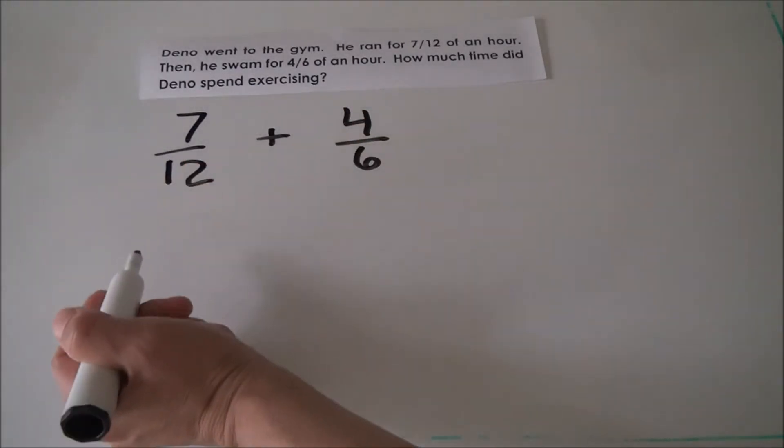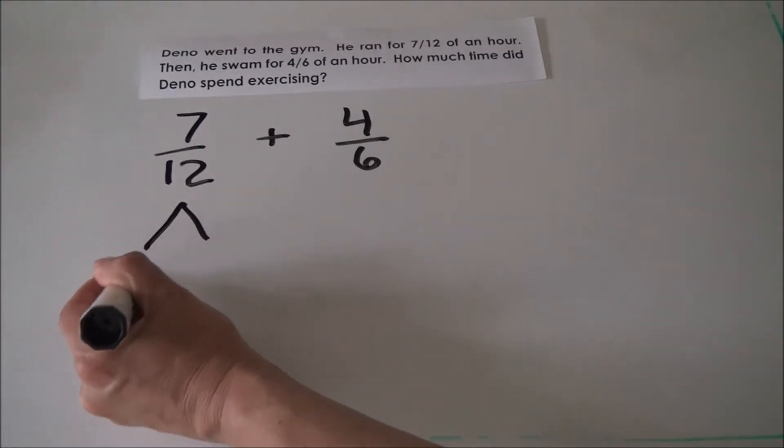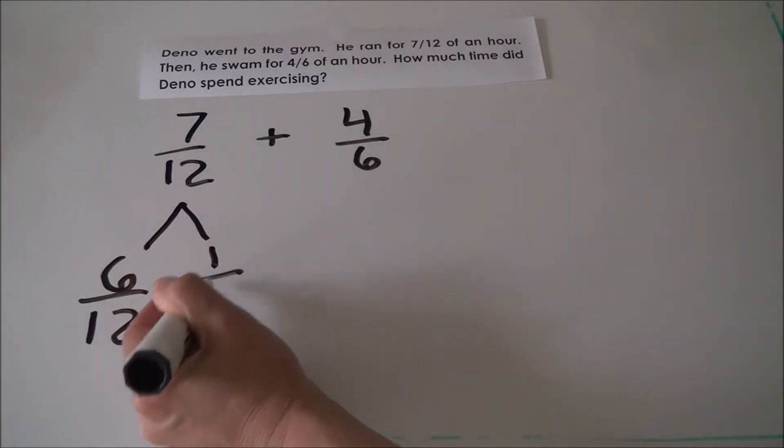We know 7/12 is just a little more than 1/2. We know this because it can be decomposed into 6/12, which is equal to 1/2, plus another twelfth.